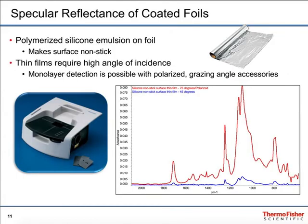Here's an application showing why you would use different angles. This is aluminum foil with a thin coating on the surface. If you look at the two spectra shown, the blue one involved bringing the beam in at near 45 degrees, whereas the red one involved bringing the beam in at about 75 degrees. You can see the big difference in the signals — the 75 degrees makes for a much more intense signal. This is a very thin film, which is why this works this way. With a thick film, you'd prefer to use the steeper angle, because otherwise your signal would be totally absorbing.